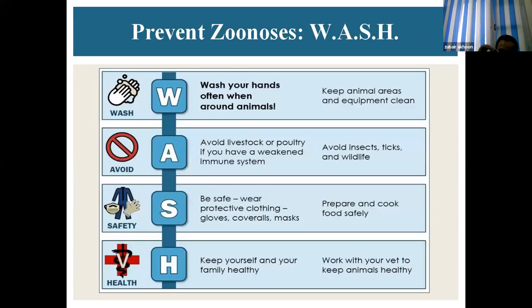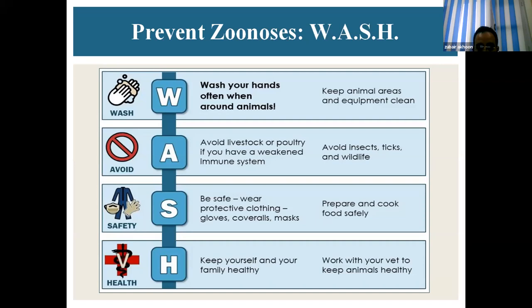In summary, to prevent zoonosis: wash hands often when around animals, keep areas and equipment clean, avoid livestock or poultry if you have a weak immune system, avoid insects, ticks, and wildlife, wear protective clothing, prepare and cook food safely, keep your family healthy, and work with your veterinarian to keep animals healthy — because that is how we can also remain healthy. Thank you.